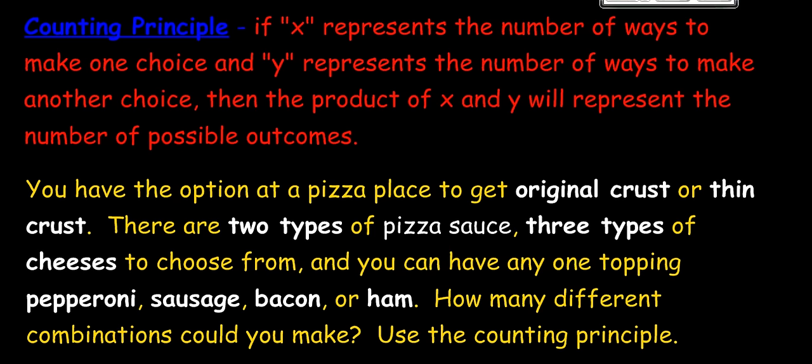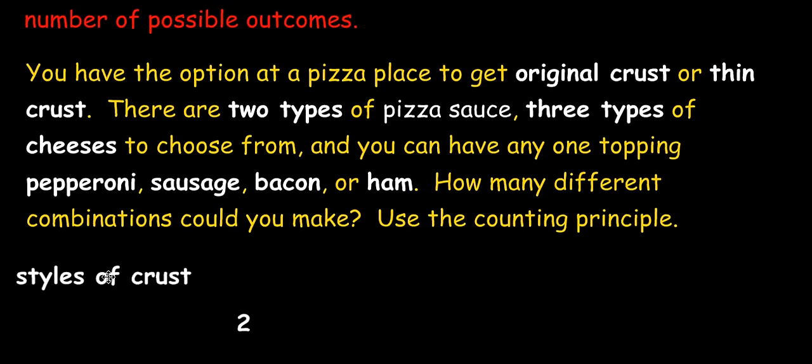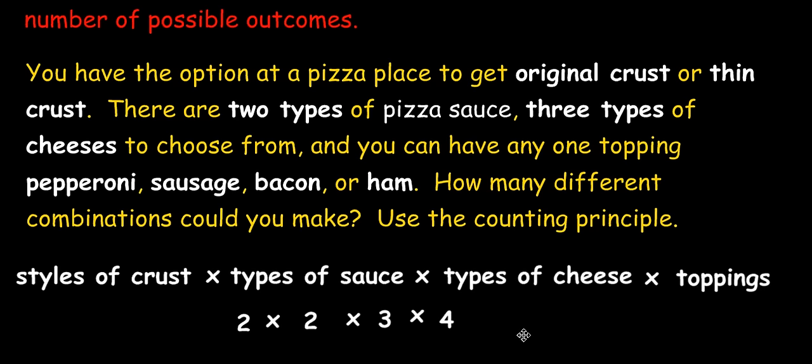So, as we continue here, we have a problem. It says you have the option at a pizza place to get original crust or thin crust. There are two types of pizza sauce. There are three types of cheeses. And you can have any one topping on your pizza: pepperoni, sausage, bacon, or ham. How many different combinations could you make? You can see in this example it would take a very long time in order to try to draw a tree diagram. So we came up with something called the counting principle. We have two styles of pizza. We have two types of sauce. Three types of cheeses. And four possible toppings. So how many total outcomes are possible? 48.